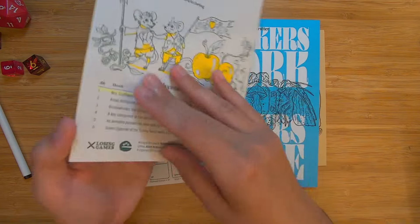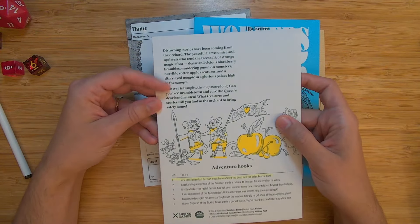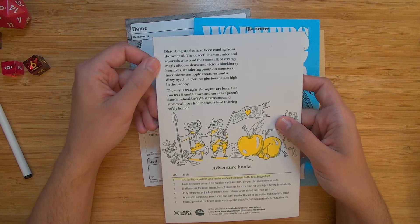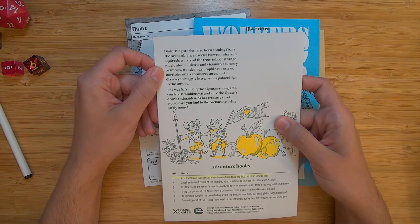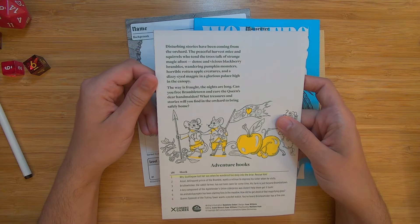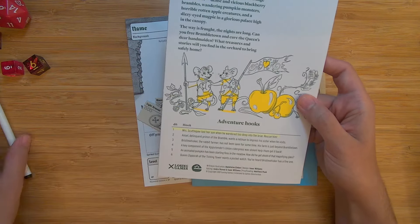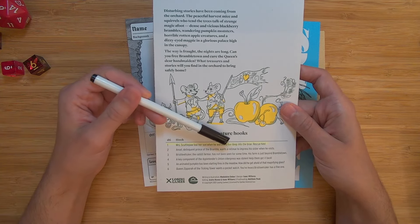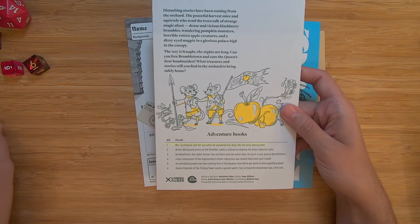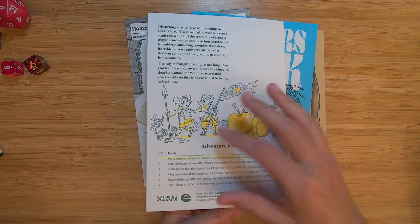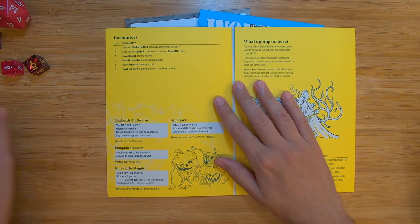So this is a quick, as a GM, do I want to run this? Here's a little snippet. Disturbing stories have been coming from the orchard, the peaceful harvest mice and squirrels who tend the trees, talk of strange magic afoot, dense and vicious blackberry brambles, wandering pumpkin monsters, horrible rotten apple creatures, and a dizzy eyed magpie in a glorious palace high in the canopy. And it continues. So this is the adventure that I ran back when I ran it. And I picked the first one. Mrs. Scuttlepaw lost her son when he wandered too deep into the briar. Rescue him. So that's the adventure hook. That's it. So you're in Brickport, and Mrs. Scuttlepaw comes up to you and says, hey, my son, et cetera. So this is the structure of the adventure. So the front is art. The back is a quick synopsis and adventure hooks. And the inside spreads are where the adventure is.